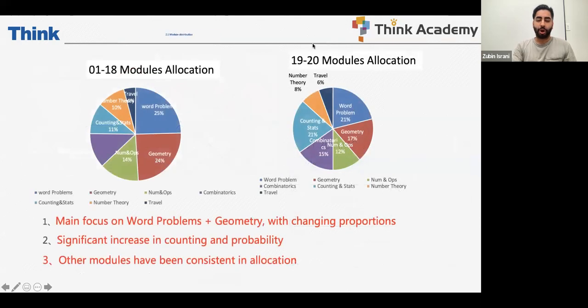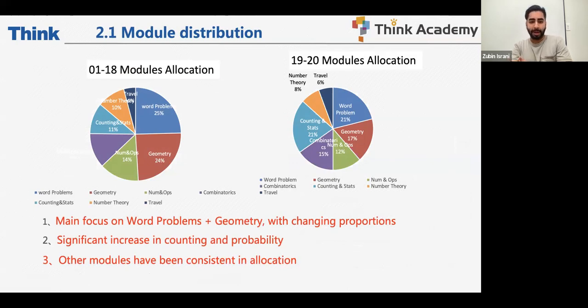Let's go on to the allocation of the modules. What topics will be covered in the AMC 8 series? At Think Academy, we have the same modules and thankfully even the AMC 8. So for all parents who are at the Academy, you have no reason to be stressed because all the topics are covered within the semesters. The module allocation is as follows: word problems, geometry, numbers and operations, combinatorics, counting and statistics, number theory, and finally, the travel problem. As you can see, the main focus is on word problems and geometry.